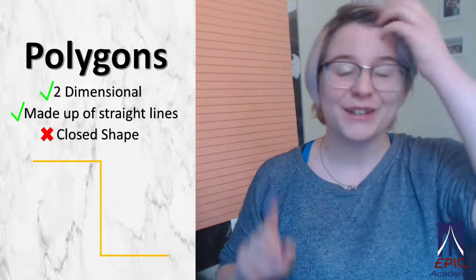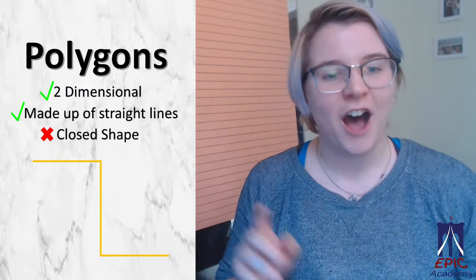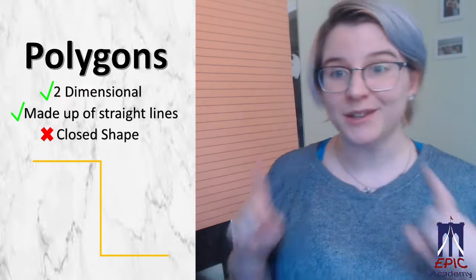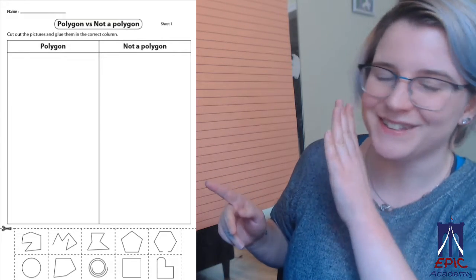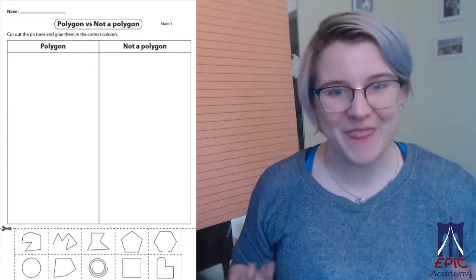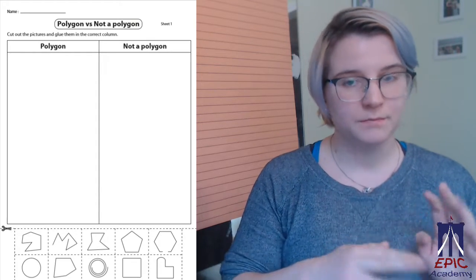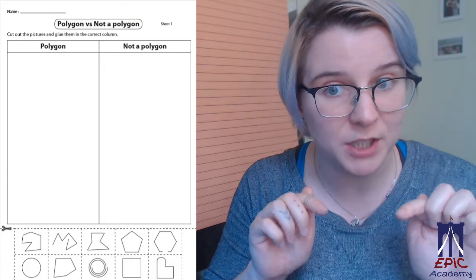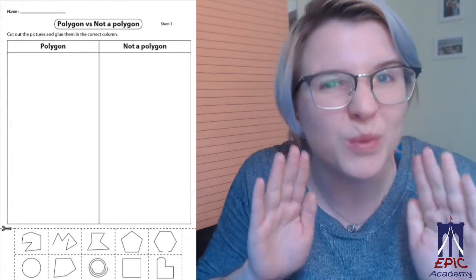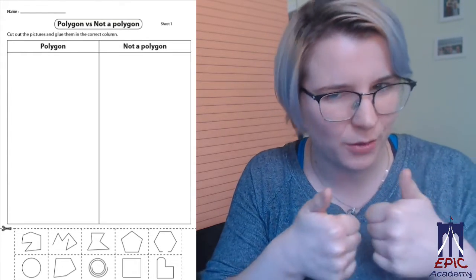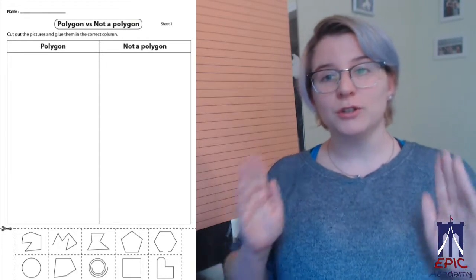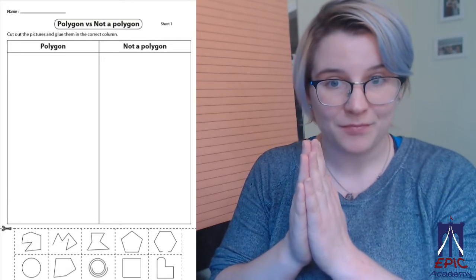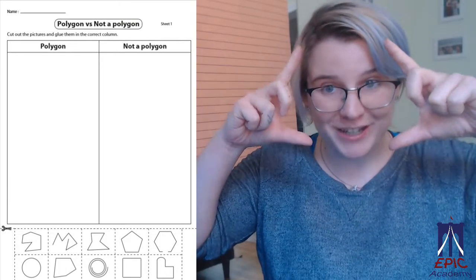Alright, now it's your turn. On the clickable schedule, you're going to find a link to a cut and sort activity that looks something like this. It looks exactly like this. Go ahead and print that out. Cut out the shapes on the bottom. I really want you guys to cut out the shapes yourself. Because using scissors is really good fine motor practice. So cut those out. Glue them into the correct column. Either a polygon or not a polygon.